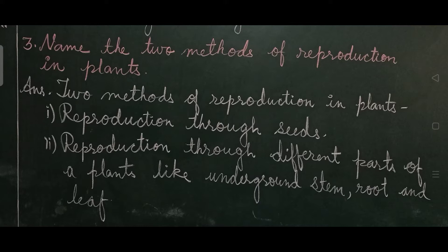Question number three: name the two methods of reproduction in plants. The two methods of reproduction in plants are: reproduction through seeds, and reproduction through different parts of a plant like underground stem, root, and leaf.